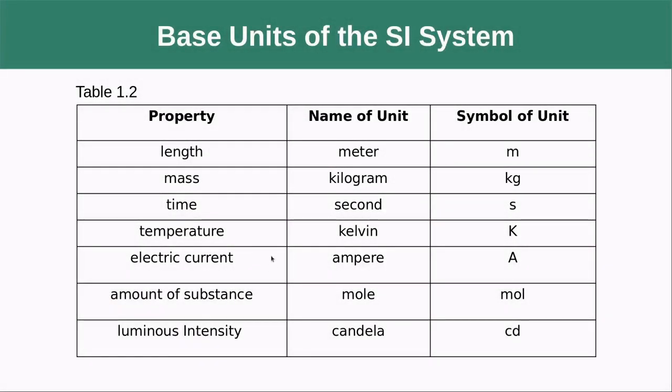The SI system is based on a few base units. We have length, which is given in meters with a symbol of lowercase m. Mass is done in kilograms. Time is done in seconds. Temperature is Kelvin, which we'll talk about in a little bit. Electrical current is the ampere or the amp, which has a capital A. The amount of substance of something is a mole, and the luminous intensity is the candela unit or CD.